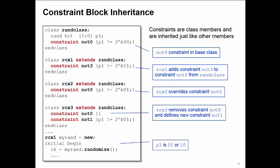And now when I create an instance here, myrand of RCX1 and randomize it, I'm randomizing it with both the NOT3 constraint from RCX1 and the NOT0 constraint inherited from randclass, which means that P1 can be either equal to one or two.